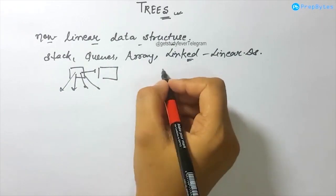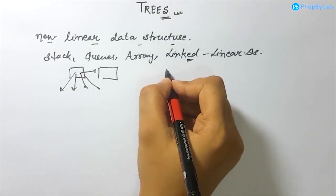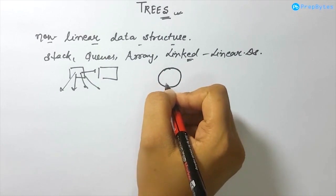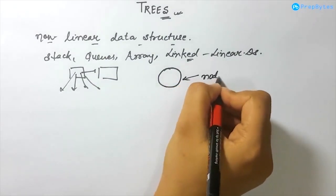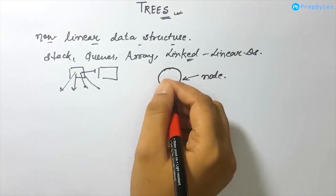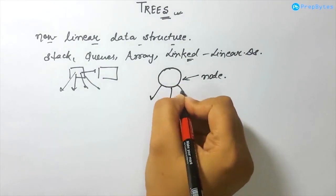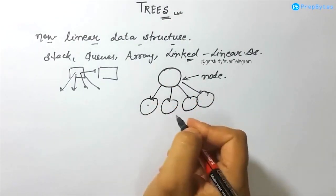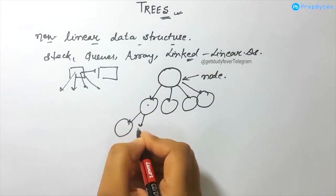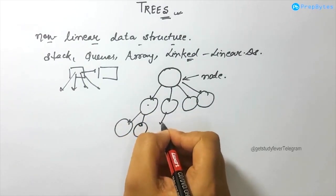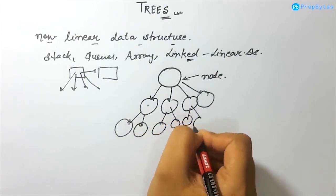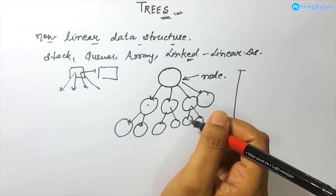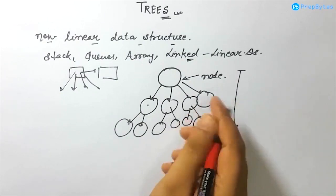Let's see how a tree looks. In a tree, we have a particular node — generally represented using a circle — and this node has pointers to n different number of nodes. This is a tree structure, and it's a way of representing a hierarchical structure in a graphical form.